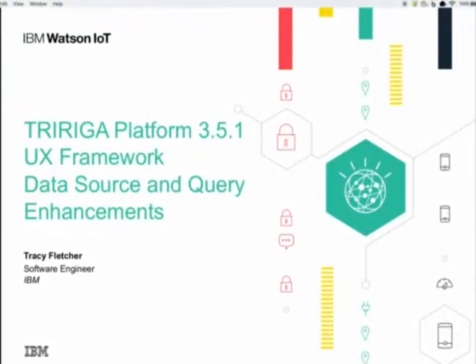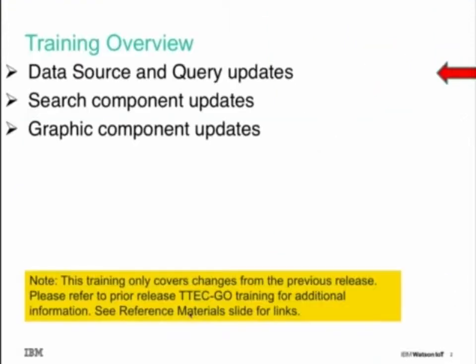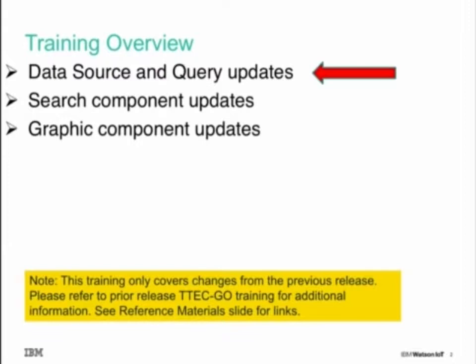Welcome to the TriRiga Platform 351 TTEC Go training for the UX framework. This module will cover the data source and query enhancements in this release. There are two other modules that I invite you to also review: a module for the search component and a module for the graphic component updates. All three of these modules only cover the changes made since the previous release, so please refer to the TTEC Go training for the prior releases for more information. There will be links to that training in the reference materials at the end of this presentation.